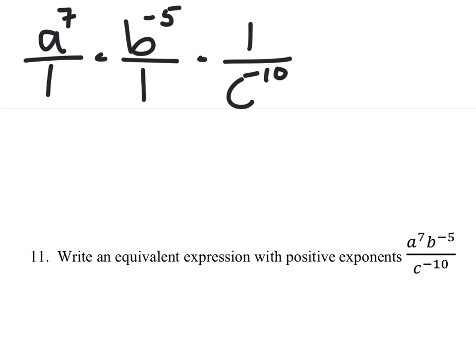So I'll reciprocate where it's necessary and if it's not then I won't. So a to the power of 7 already has a positive exponent. It's just going to stay a to the power of 7, make it over 1.